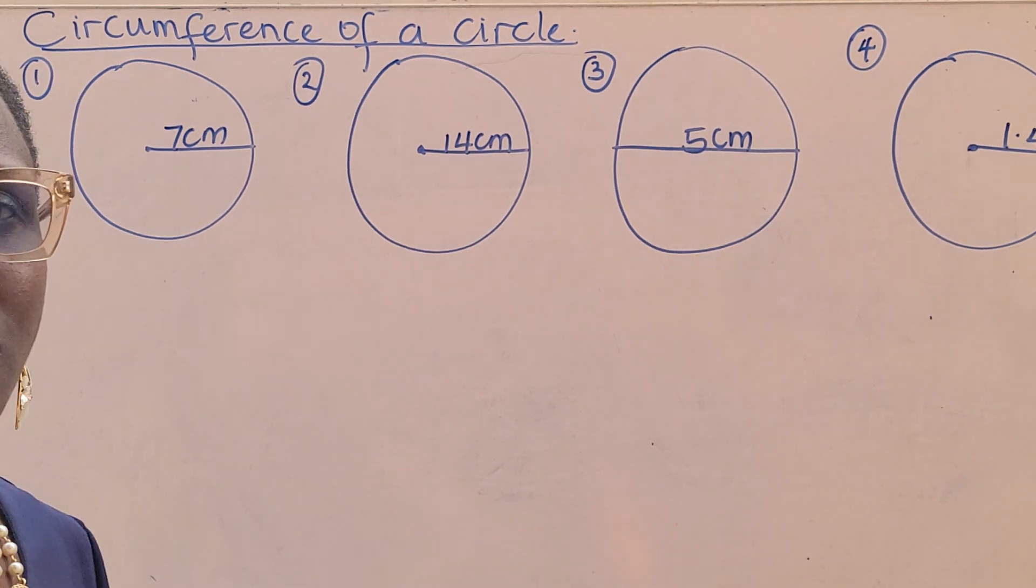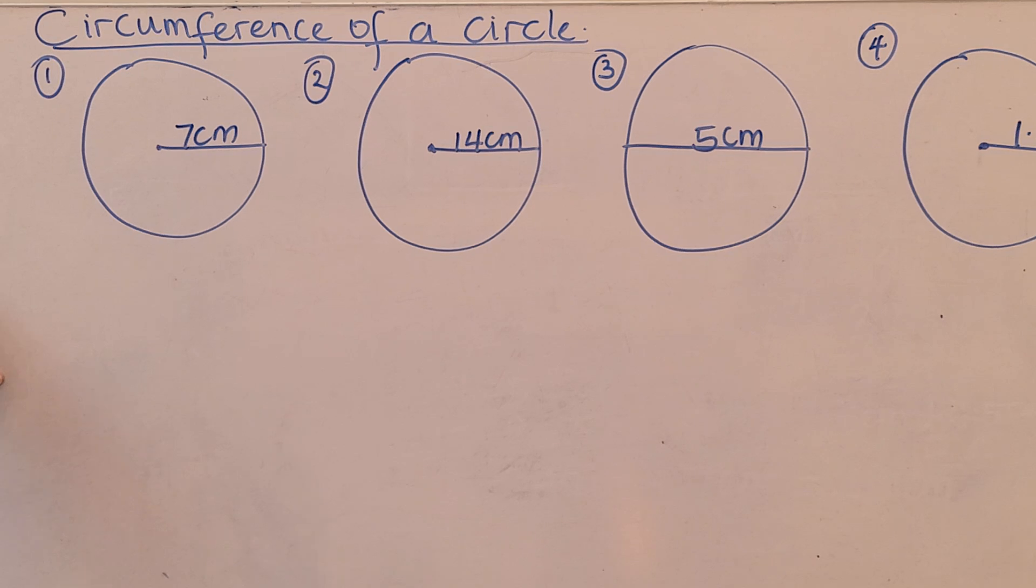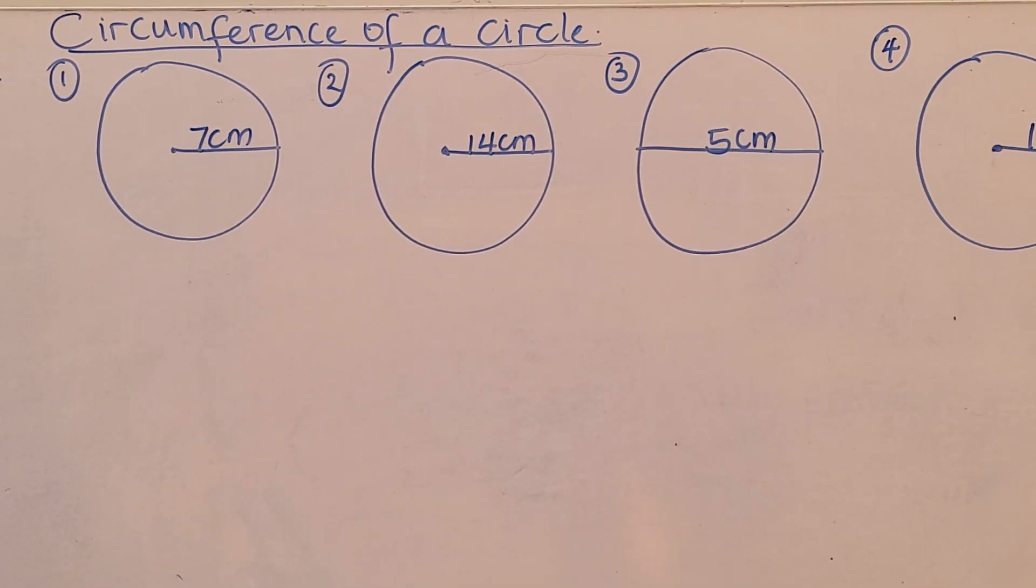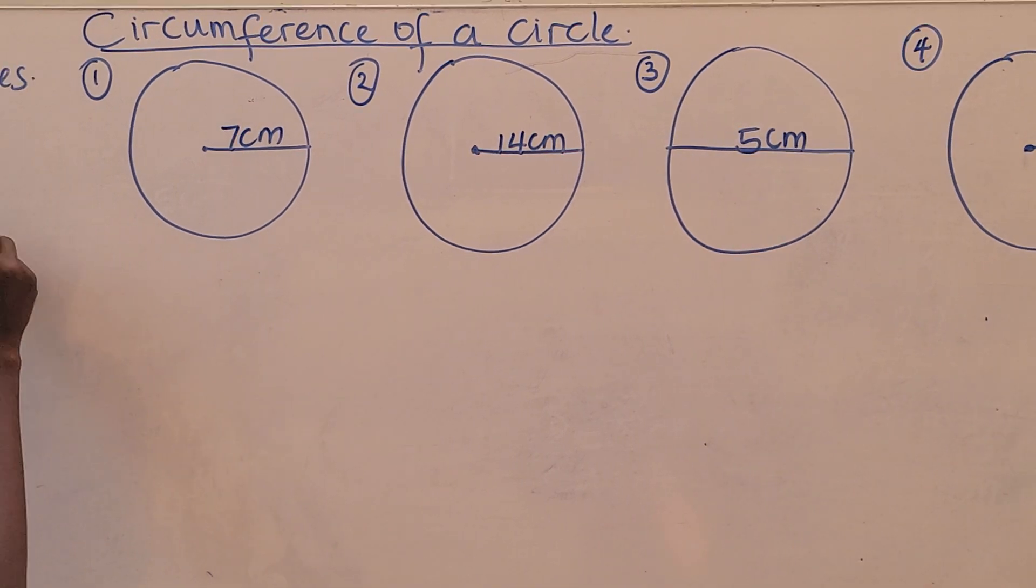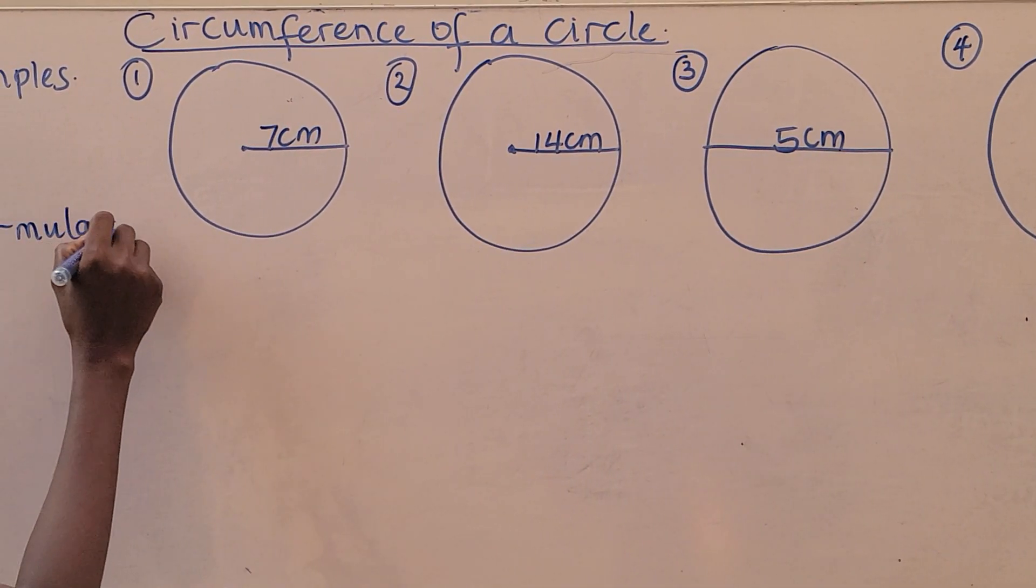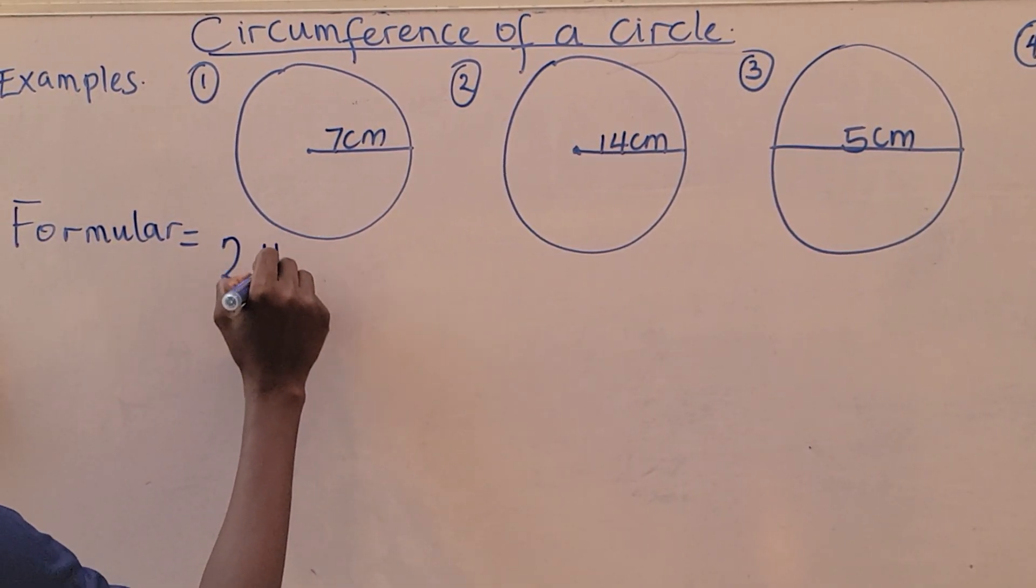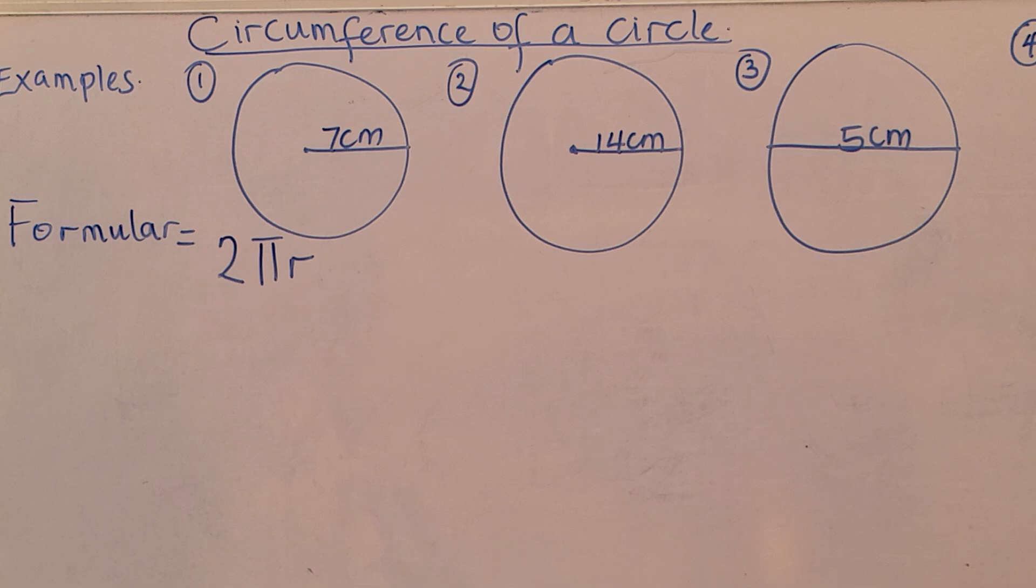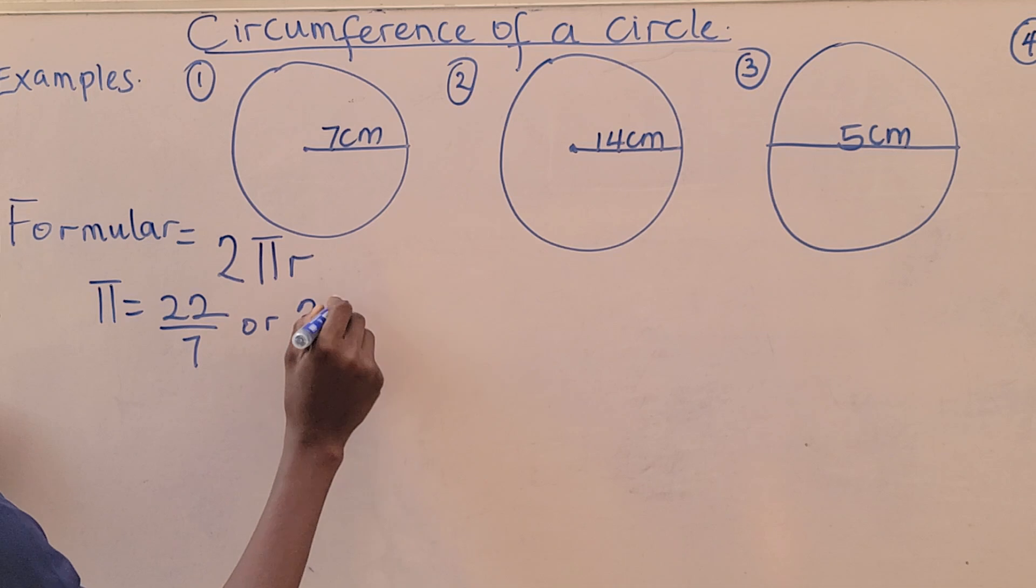This is the formula. We have the formula for this to be 2πr. In cases where radius r is given, π is 22 over 7 or 3.14.